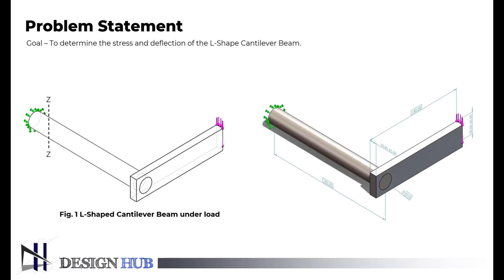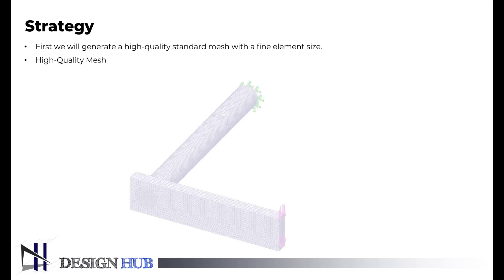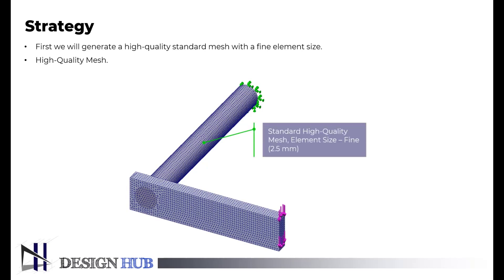We know the dimensions of the L-shaped cantilever beam. The strategy for this problem will be generating a high-quality fine mesh of element size 2.5 millimeters to get accurate results and obtain deformation curves after the results. Also, since both the members are assembled, one should assign material individually at the time after modeling each.